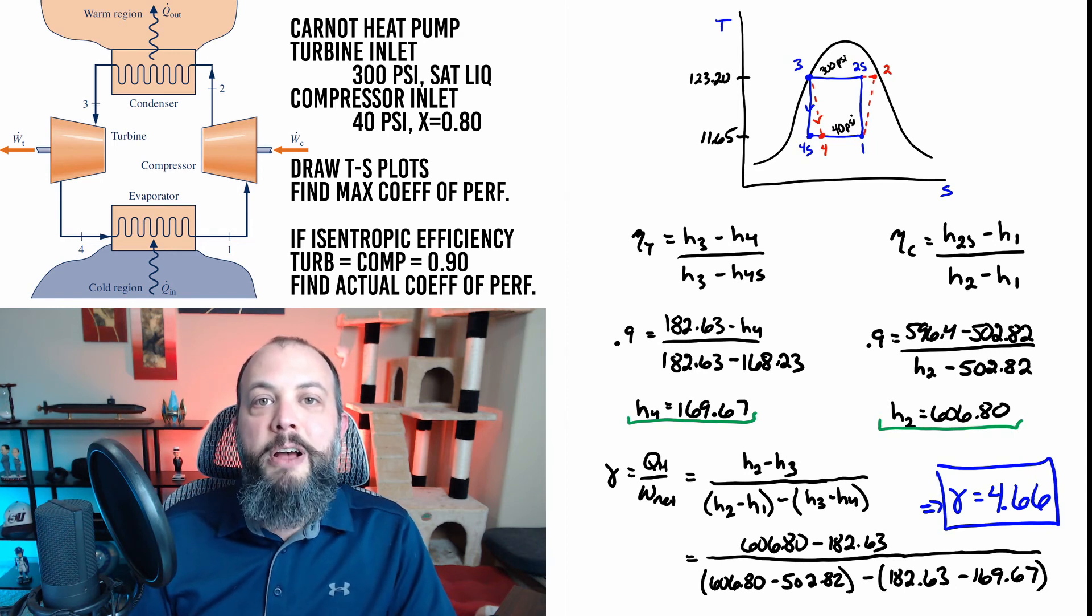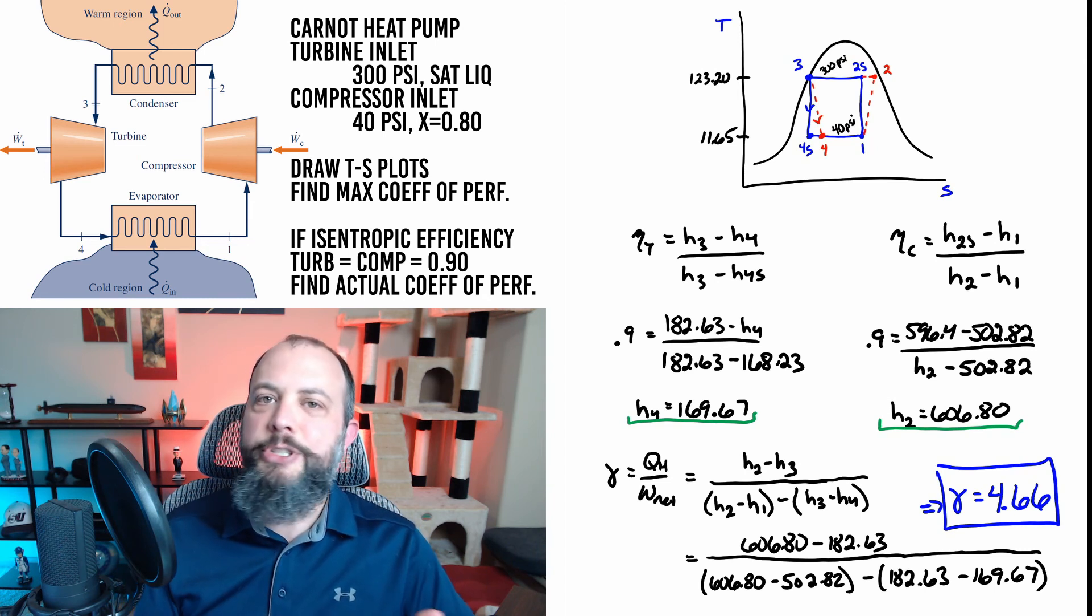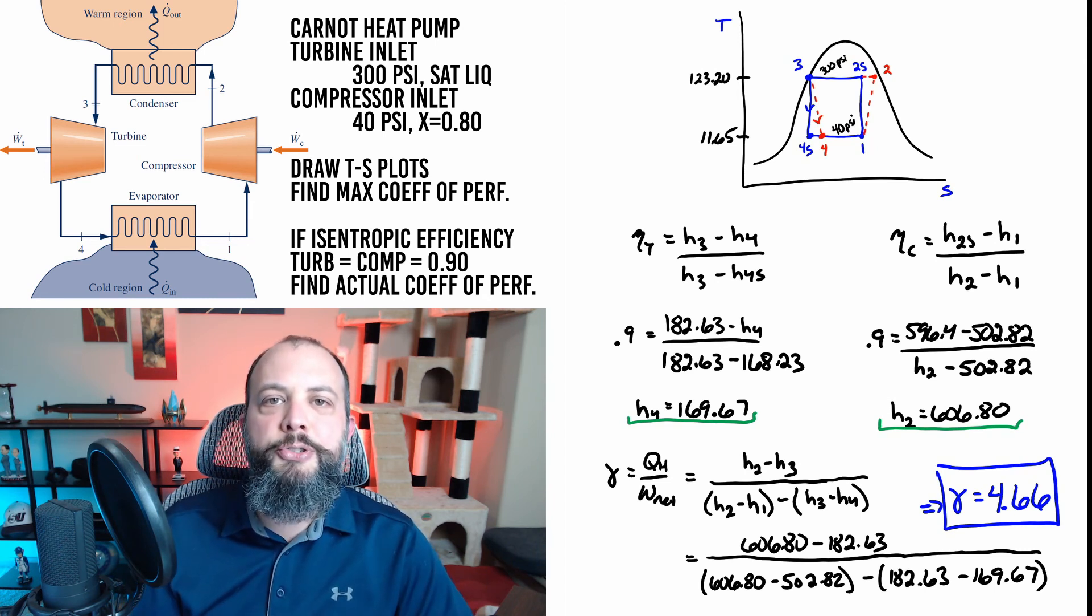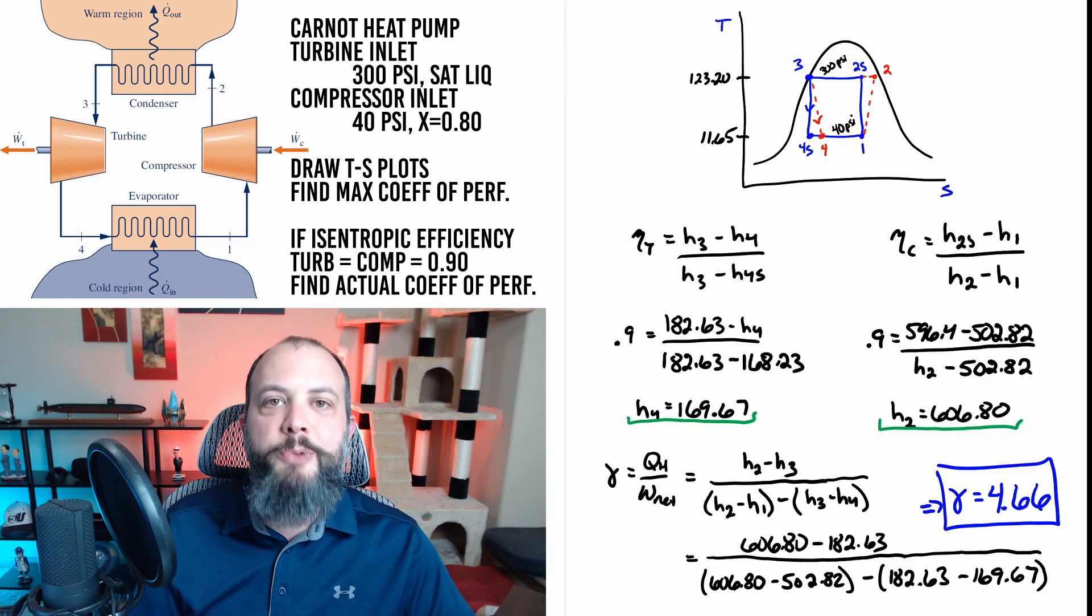Comparing that to the 5.22 that we found before it's good that we got an answer that is less. Once we include isentropic efficiency and the turbine and compressor are no longer performing at their maximum level it makes sense the coefficient of performance should decrease a little bit. And since the isentropic efficiencies were both 90% which is pretty good we wouldn't expect performance to drop that much. So this decrease around 10% does also seem to make sense. It doesn't have to drop exactly 10% just because our isentropic efficiencies were 90% but as a general rule of thumb a small decrease in efficiency should only result in a small decrease in performance which is what we see.